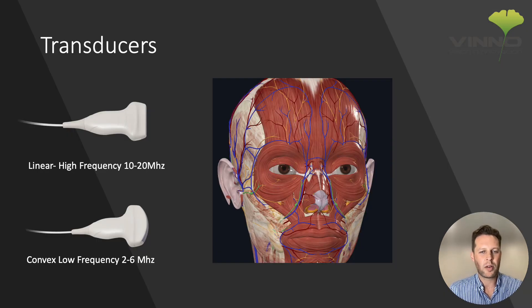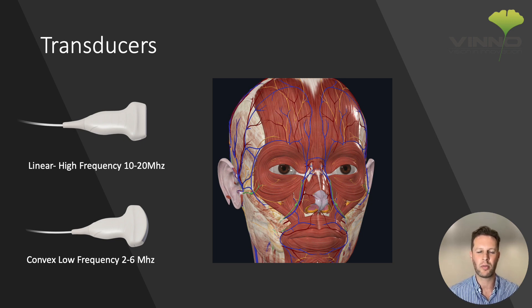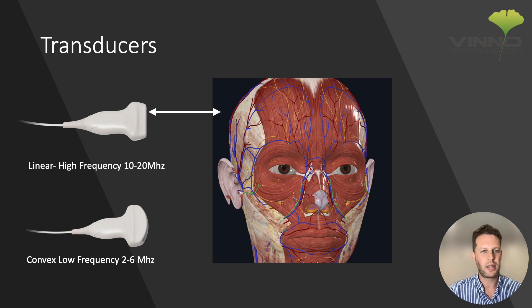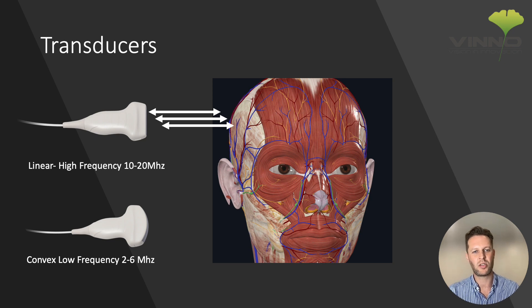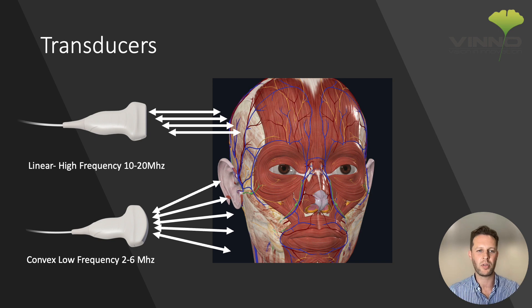In ultrasound we have many different types of transducers. In aesthetics we typically only use high frequency linear transducers, and the reason for that is that higher frequency transducers have a better resolution image for superficial imaging. Linear transducers send the ultrasound beam straight out and straight back, whereas with convex transducers the beam is splayed out, so you get a wider field of view.